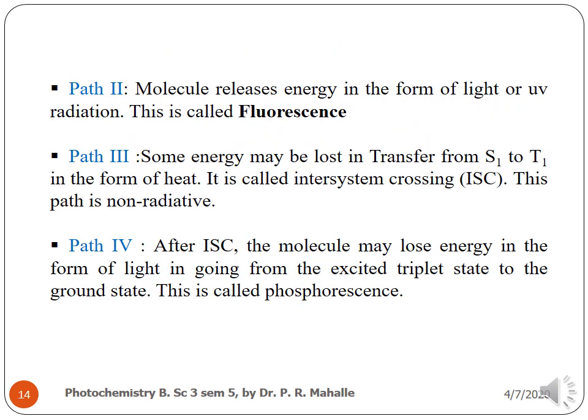Path 2: the molecule releases energy in the form of light or UV radiation; this is called fluorescence. Path 3: some energy may be lost in the transfer from S1 to T1 in the form of heat; this is called inter-system crossing (ISC), and this path is also non-radiative. Path 4: after inter-system crossing, the molecule may lose energy in the form of light in going from the excited triplet state to the ground state; this is called phosphorescence.